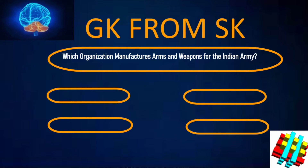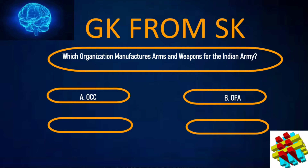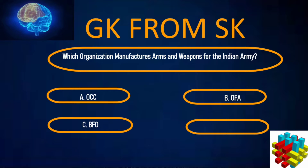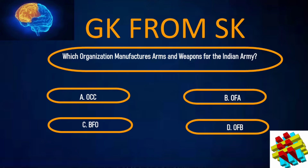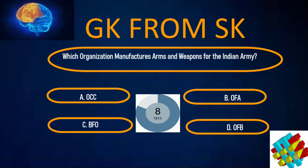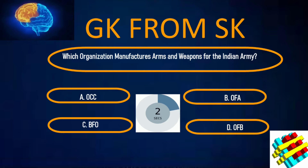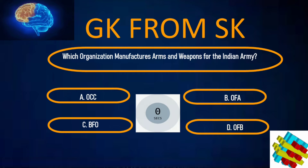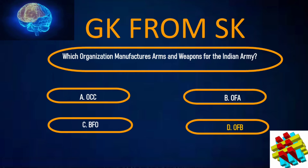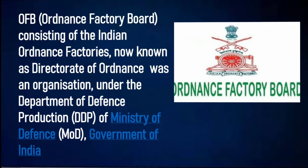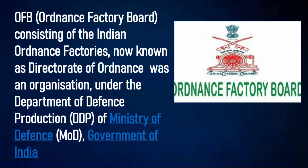Which organization manufactures arms and weapons for the Indian Army? A. OCC, B. OFA, C. BFO, D. OFB. Your time starts now. Correct answer: D. OFB. OFB, consisting of the Indian Ordnance Factories, now known as Directorate of Ordnance, was an organization under the Department of Defense Production, Ministry of Defense, Government of India.